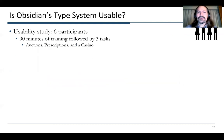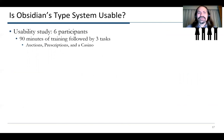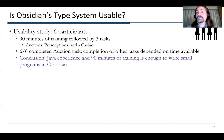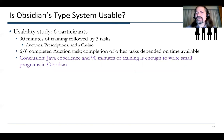The insight here is that making the notation match the user's conceptual model helps make the system more usable. Is Obsidian's type system actually more usable? We did a usability study with six participants — we gave them 90 minutes of training; they had never seen Obsidian before — followed by three tasks: modeling auctions, prescriptions, and casino. All of them completed the auctions task. The completion of the other tasks depended on how much time was available. But what was neat was that Java experience and 90 minutes of training is enough to write at least one small Obsidian program, and generally it seemed like they were succeeding in all three tasks if they had enough time — typically those with more Java experience completed more quickly.